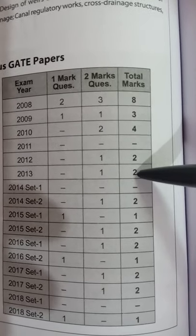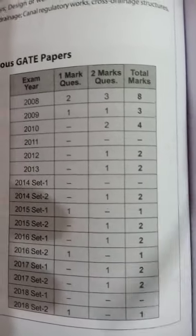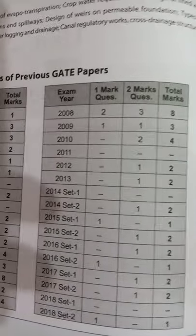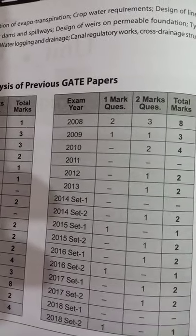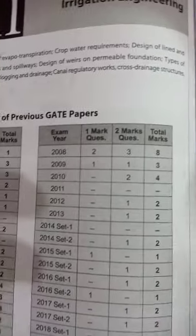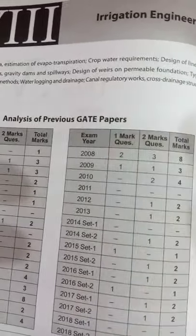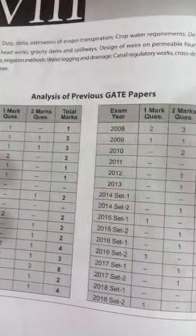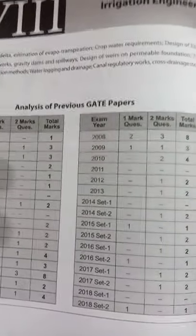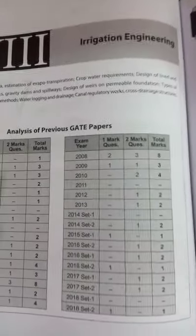2014 Set 1 had 2 marks, Set 2 didn't ask. Overall, in irrigation engineering, mainly 3-4 marks come every year. Videos are available in both Hindi and English. Now I'll discuss short notes.